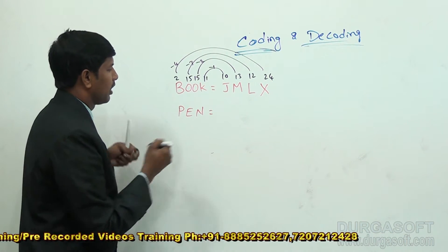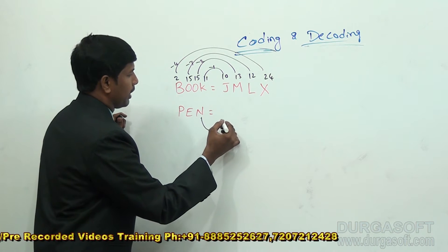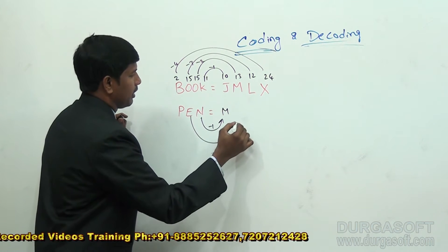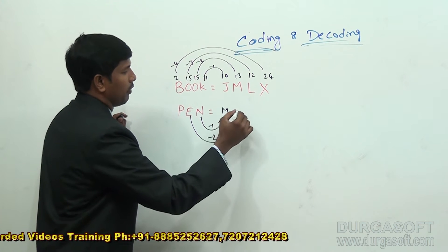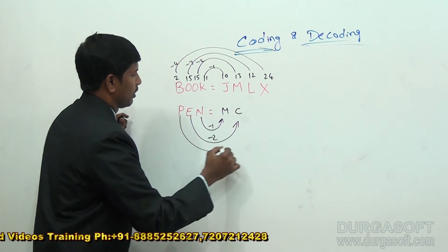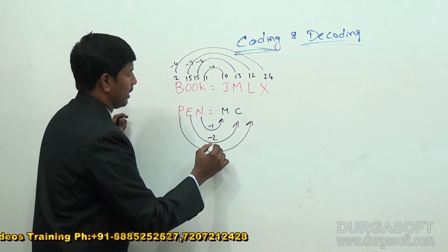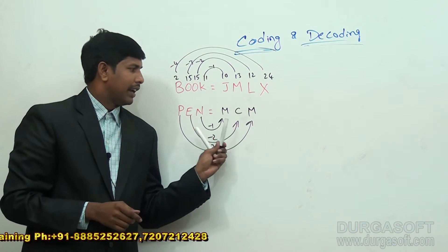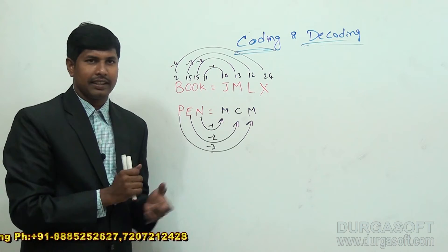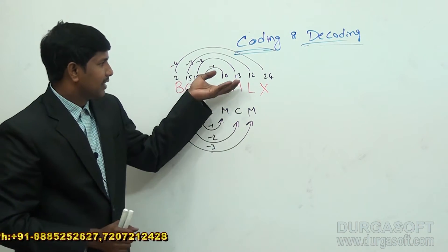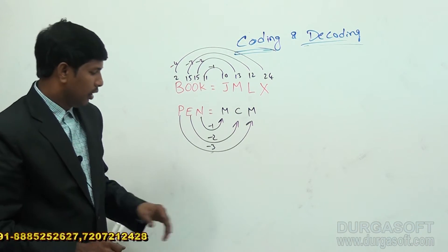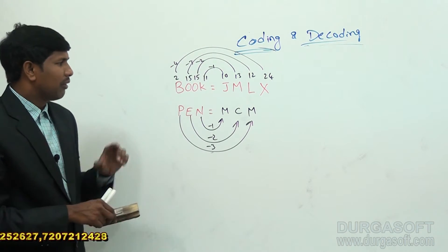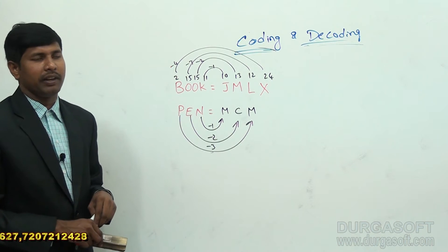Now we should consider: N minus 1 is M, E minus 2 is C, P minus 3 is M. In this way, we can understand the logic, which matches the given word. These are codings related to the value of each and every alphabet.